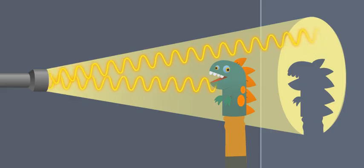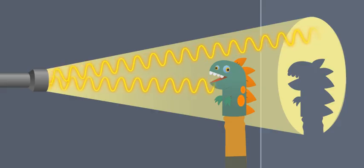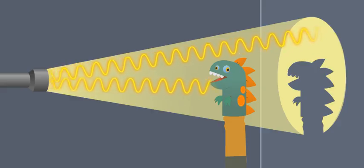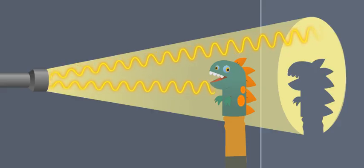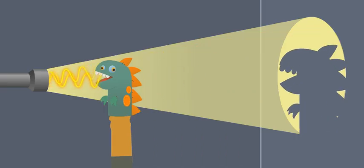So when you held that thing in front of the flashlight, it blocked the beam. Right, and the light that wasn't blocked kept traveling until it hit the wall. Look, the shadow's bigger when the creature's closer to the flashlight. Of course, it's blocking more of the light.